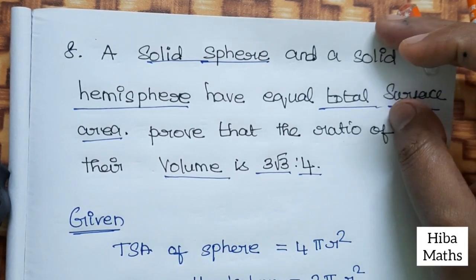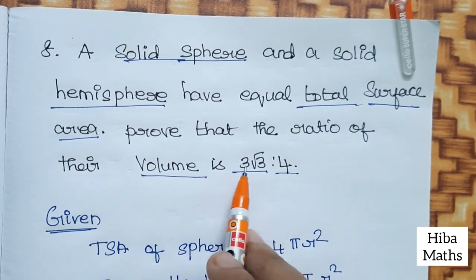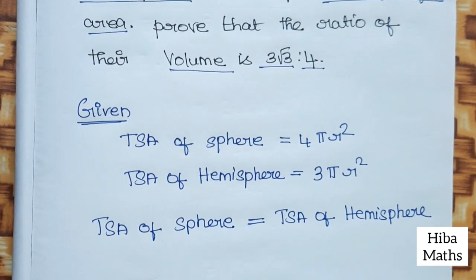So we are going to compare the TSA to the volume ratio, 3√3 is to 4, and we are going to prove it. So given TSA of sphere and hemisphere.